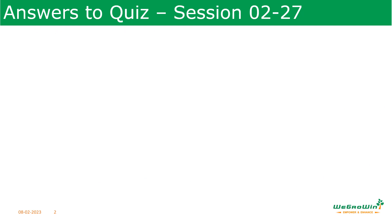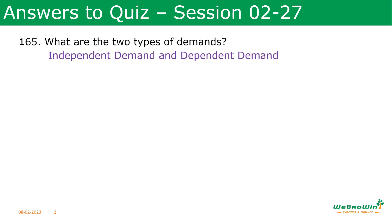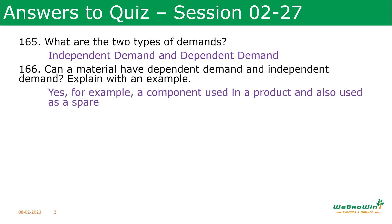What are the two types of demands? They are independent demand and dependent demand. Can a material have both dependent and independent demand? Yes. For example, a component used in a product and also used as a spare part — when it is used in a product it is dependent demand, and when it is used as a spare it is independent demand.